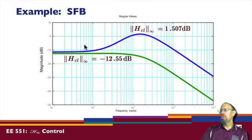And so if I look at the maximum over all frequencies, which is basically what the H infinity norm gives us, here is the maximum over all frequencies. I think in this case, the maximum over all frequencies occurs at DC. And so the maximum over all frequencies is minus 12.55 dB here. So I've written this in terms of dB.